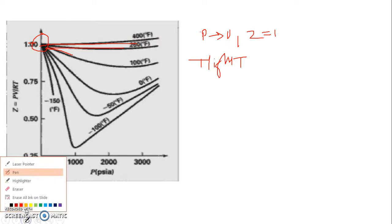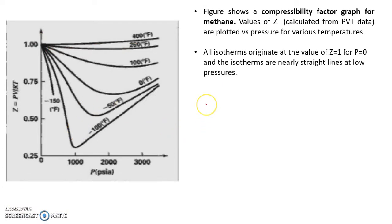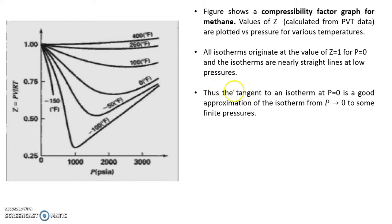Now we can prove mathematically also that z can be 1 plus b dash p. This is something which is already discussed. Thus the tangent to an isotherm at p tends to zero is a good approximation of the isotherm from p tends to zero to some finite pressure.